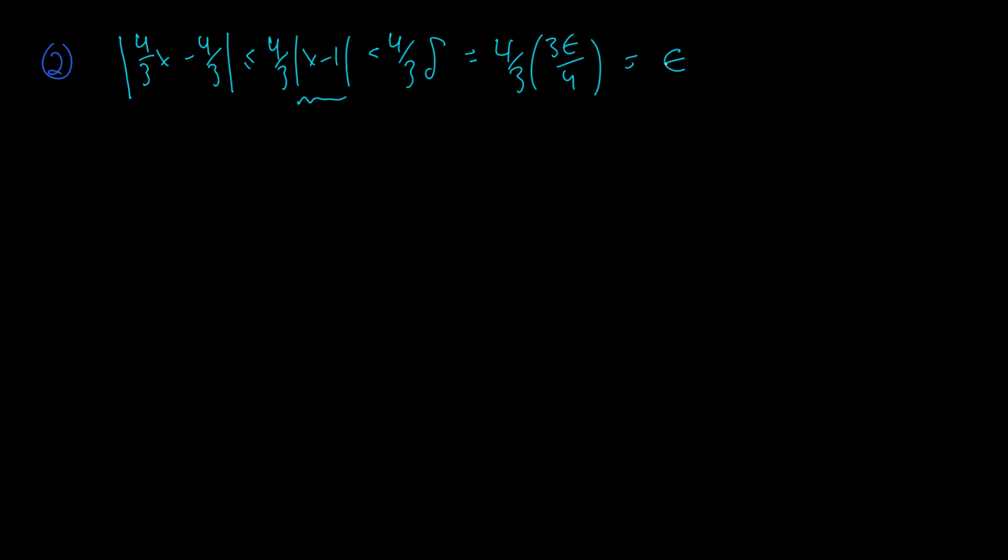And thus we have proven that the limit as x approaches 1 of 2 plus 4x over 3 is equal to 2. And hopefully you guys understand how to do these problems by now.